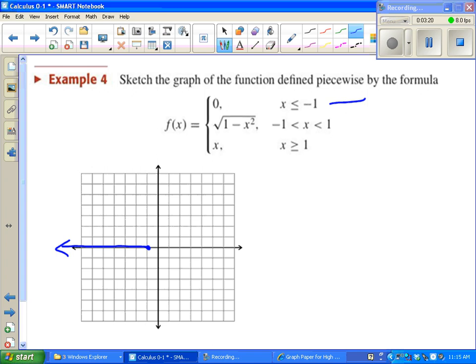The last piece says graph the line y equals x, starting at x equals one and then getting bigger. I'll plug in one first and I get one. It's a closed dot because it's greater than or equal to. Then it says we just go on forever. I'll plug in a couple more points to get my line. It's really just a line with slope one.